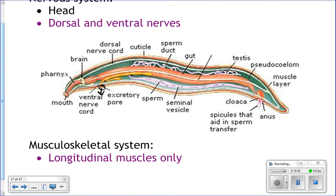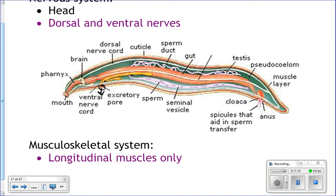Their musculoskeletal system: they only have longitudinal muscles, meaning the muscles run from the mouth down towards the tail. When muscles contract they get shorter; when they extend they get longer. As they contract and extend these muscles they move — they contract to pull their tail up, then extend to push their head forward, repeating to propel themselves.